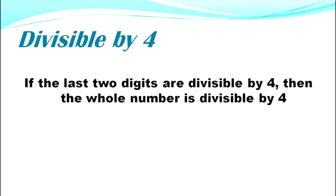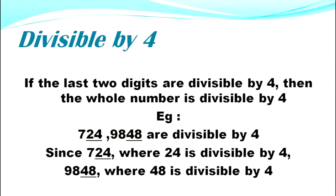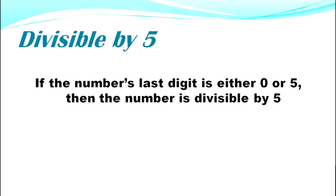Divisible by four: if the last two digits are divisible by 4, then the whole number is divisible by four. Example: 724 and 9848 are divisible by four, since 24 is divisible by 4 and 48 is divisible by 4.